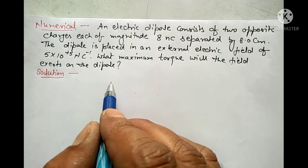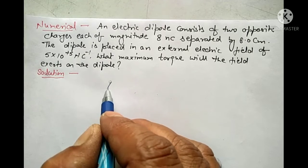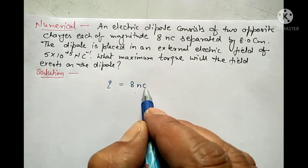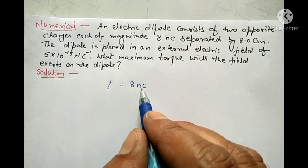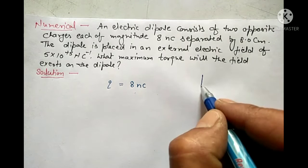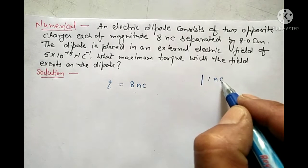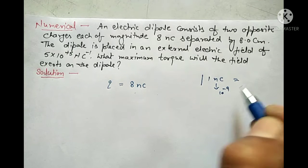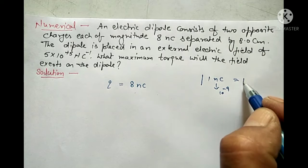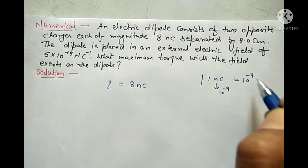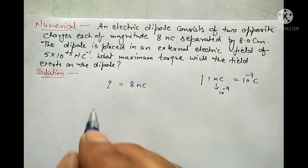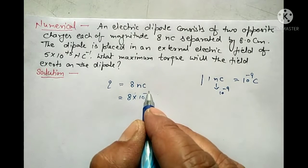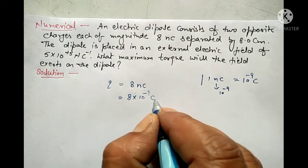Solution. Given: the magnitude of charge Q is equal to 8 nanocoulomb. First of all, we convert nanocoulomb into coulomb. We know that 1 nanocoulomb — nano means 10 raised to power minus 9 — so 1 nanocoulomb equals 10⁻⁹ coulomb. Therefore, Q becomes 8 × 10⁻⁹ coulomb.